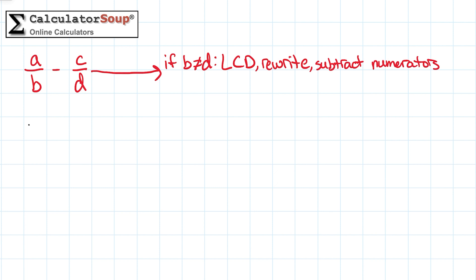Let's do another example: 15 fourths minus 5 thirds. The LCD of 4 and 3 is 12, so we will find the equivalent fractions of 15 fourths and 5 thirds with 12 as the denominator.